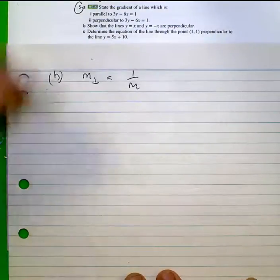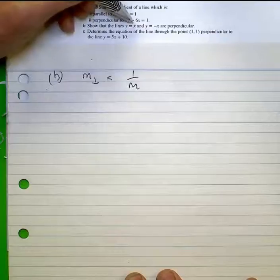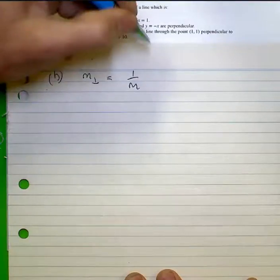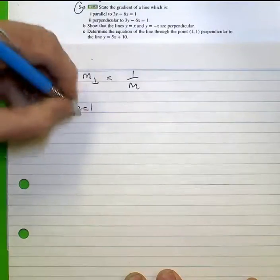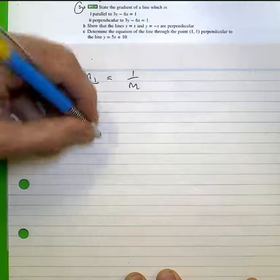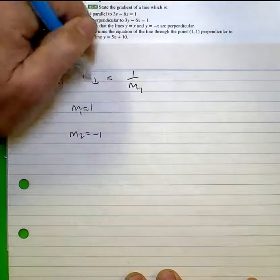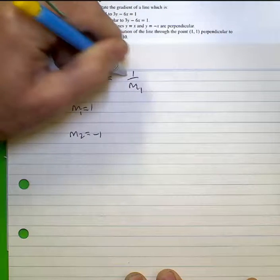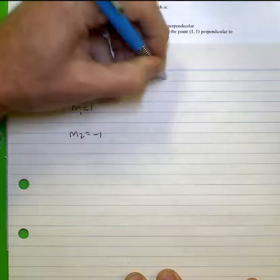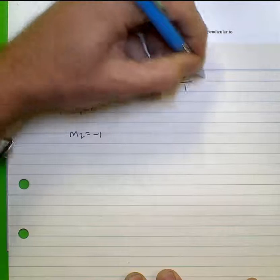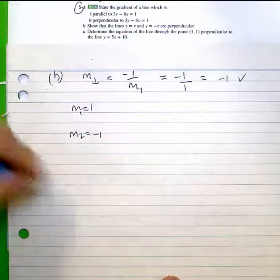In b, you can see the gradient of the first function y equals x is 1, and m2 is equal to minus 1. Perpendicular occurs the inverse, negative inverse of the other one. So negative 1 over 1, negative 1. So yes, they are perpendicular.